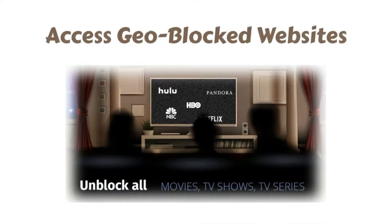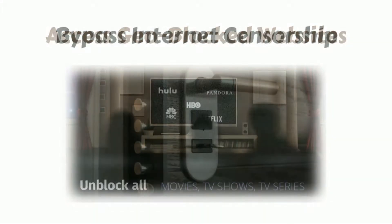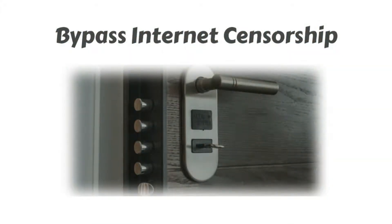Access geo-blocked websites. Whether you are an American trying to access your Netflix account while traveling out of the country, or you wish you could use American media sites like Netflix, Pandora, and Hulu, you'll be able to access these region-restricted services if you connect to a VPN located in the USA. Bypass internet censorship. Many Chinese people use VPNs to get around the Great Firewall of China and gain access to the entire internet. However, the Great Firewall has apparently started interfering with VPNs recently.